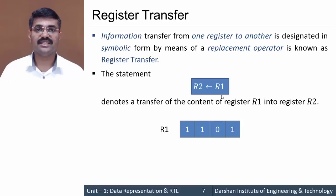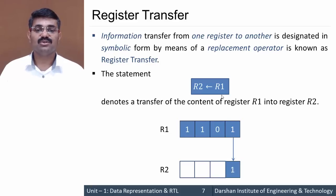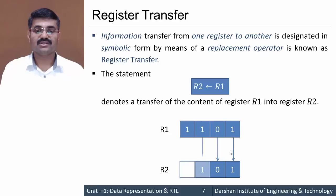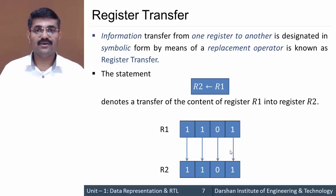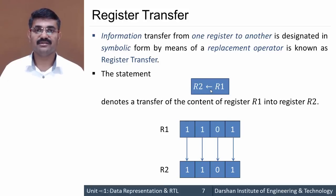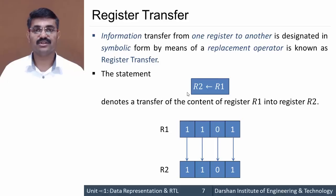As an example, consider a 4-bit register R1 containing 1101. When transferred to R2, the data is copied bit by bit, so R2 will now contain 1101. Whatever R2 previously held is replaced. The key notation is the arrow (replacement) operator, and data always transfers from the right-hand side register to the left-hand side register.